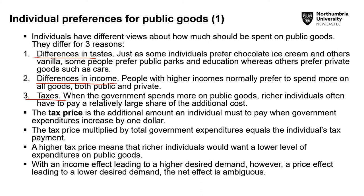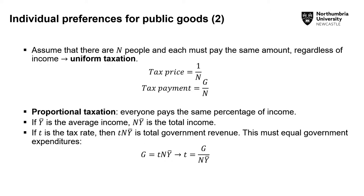Those that are wealthy and pay higher taxes are likely to want a lower level of expenditure on public goods because they now pay higher taxes. Because there are two effects — the income effect and also the price effect — that operate when we look at the demand for the desired good, the net effect is ambiguous.